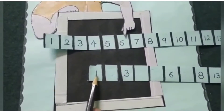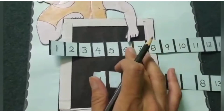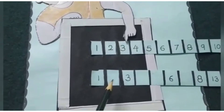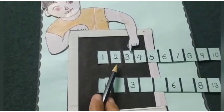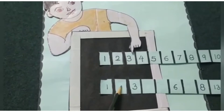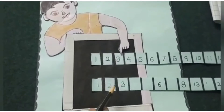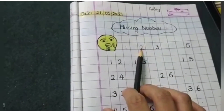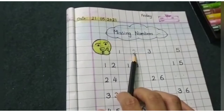This is 1 and this block is empty. Now students, see. We can fill 2 in the block. Like this. We can fill this empty box with 2. 2 is the missing number.